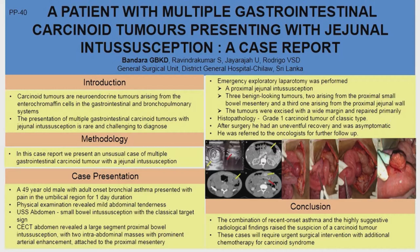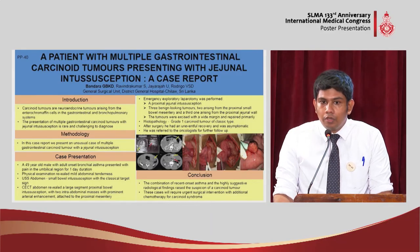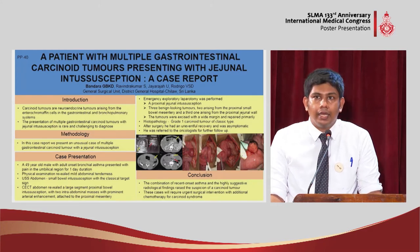We then went forward with an exploratory laparotomy. There we found a proximal small bowel intussusception which was easily reducible, and there were three intra-abdominal masses — two attached to the mesentery and one attached to the proximal jejunum. The mass attached to the jejunum may have acted as the lead point for the intussusception.